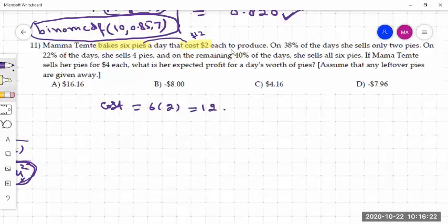So next it says that 38% of the days she sells only two pies. On 22% of the days she sells four pies, and remaining 40% of the days she sells six pies. So if Mama Tempted sells her pies for four dollars each, what is her expected profit for a day's worth of pie?